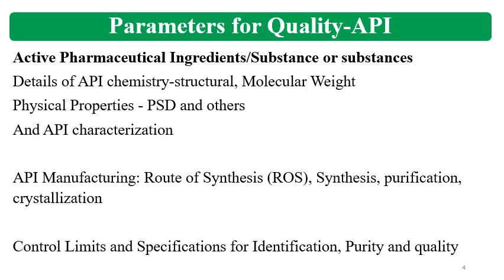CMC for the API also covers control limits and specifications for API identification, purity, quality, and potency. It details the critical steps for synthesis and purification, how in-process and finished product specifications are designed, and how analytical methods are validated and controlled. All these parameters together give the complete CMC for the active pharmaceutical ingredient or drug substance.